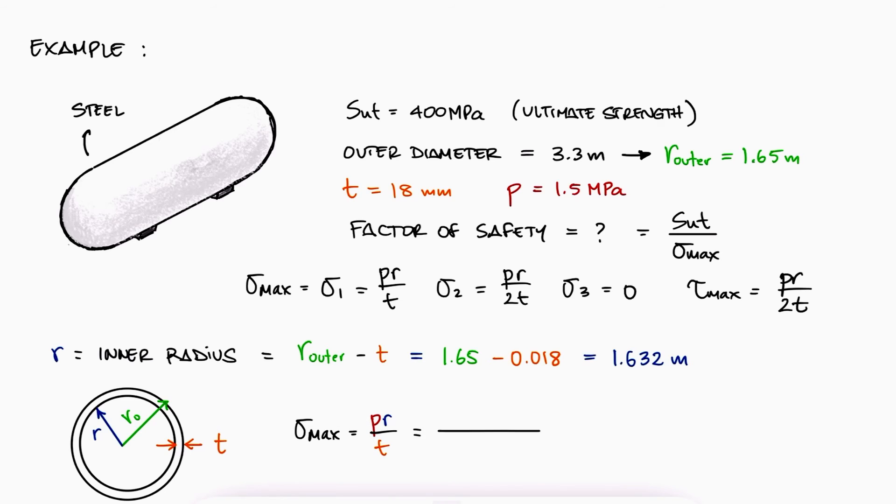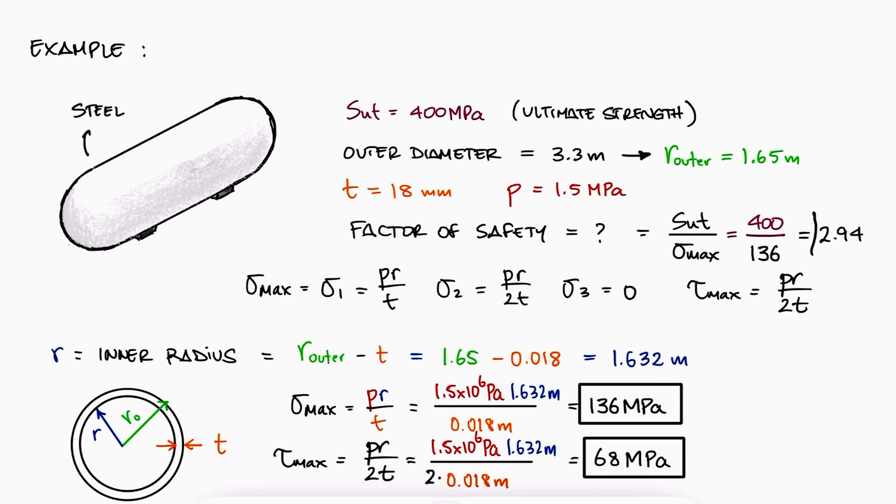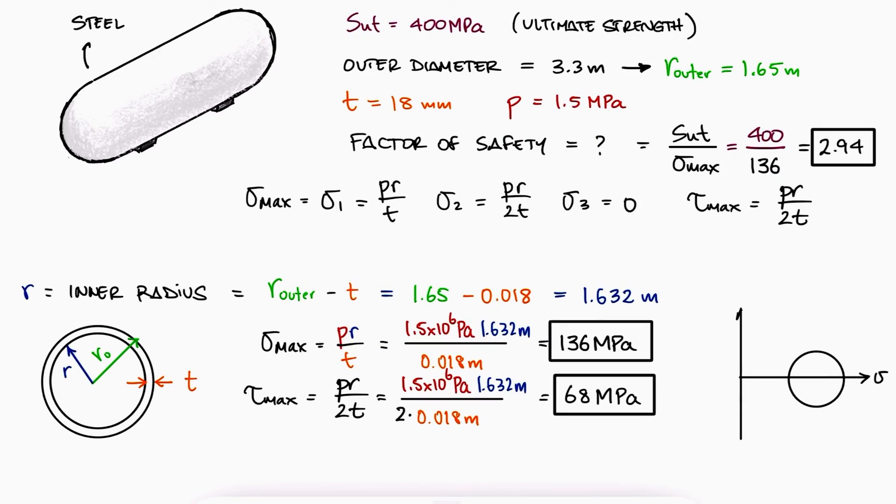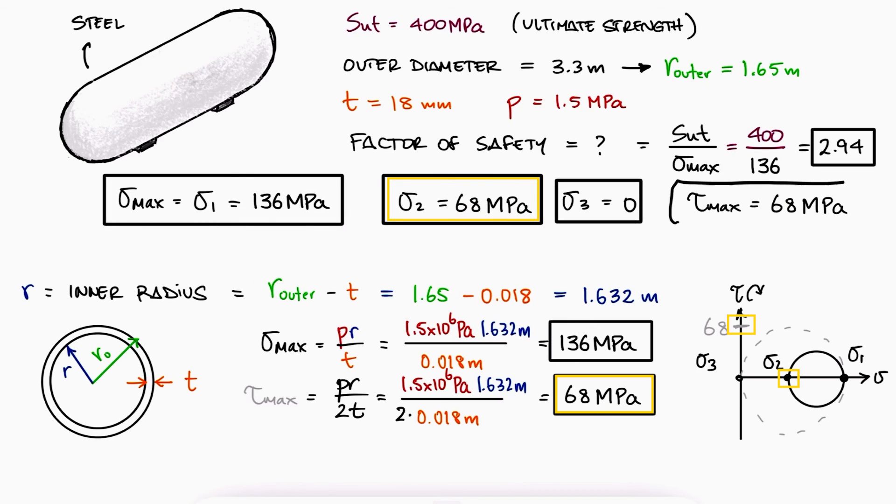With the pressure, the thickness, and this inner radius, we find the values for the maximum normal and maximum shearing stresses. The factor of safety would therefore be 400 over 136. And remember from the Mohr circle we drew before that the second principal stress has the same value as the overall maximum shearing stress.